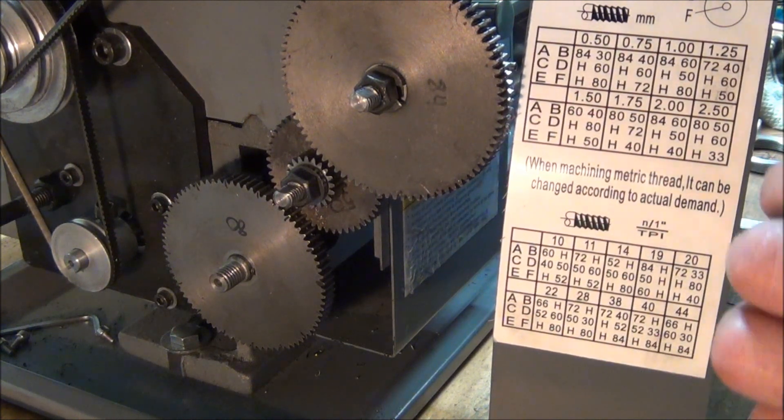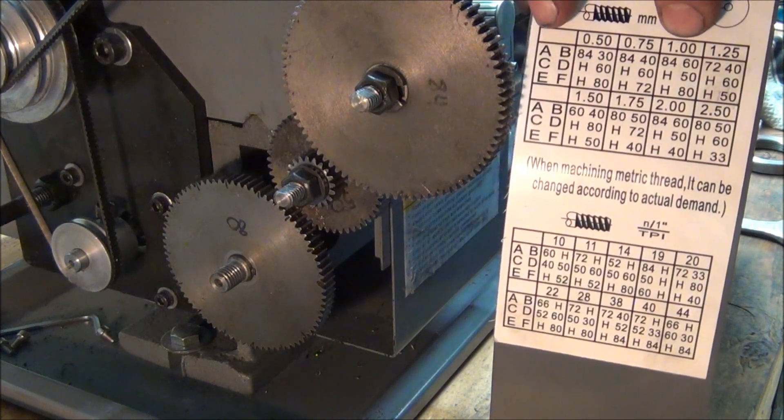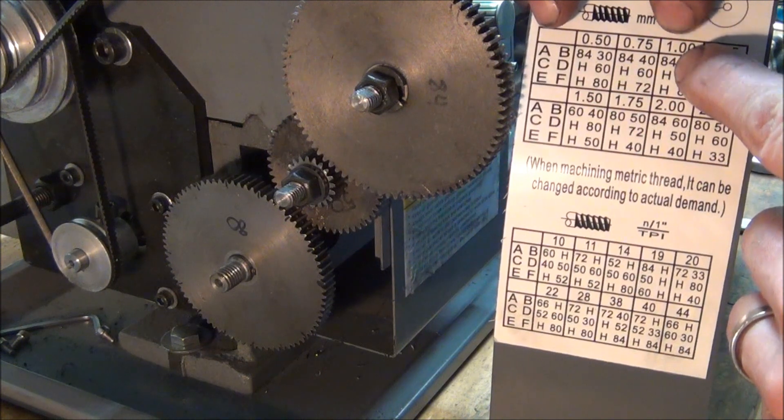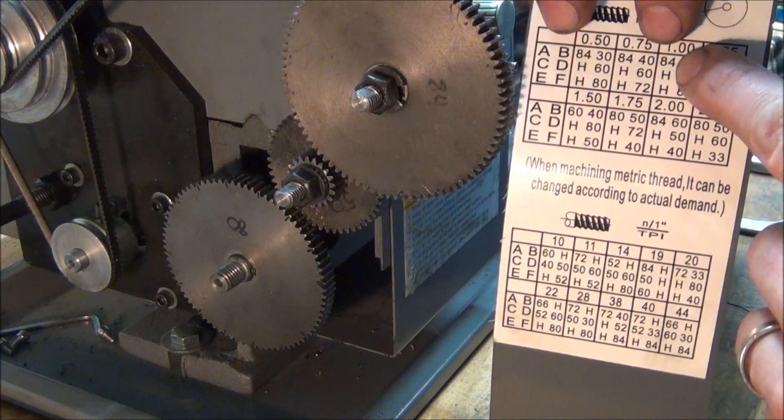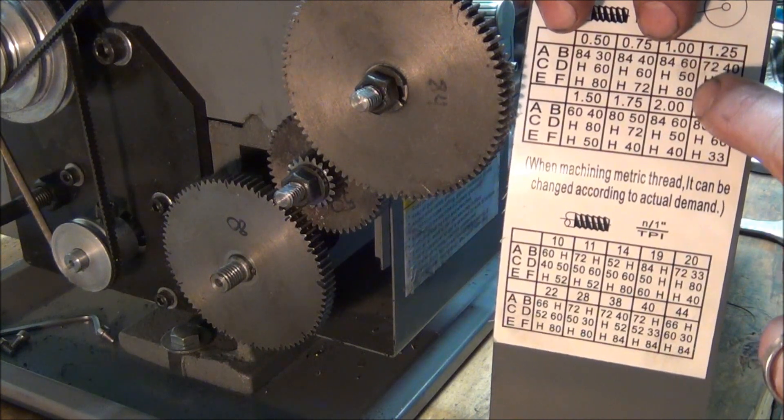If I'm reading this right, I'm pretty sure I am. We're using the one millimeter pitch, A gear, which is 84, that's driven by the spindle. On the back side of it is 60, 60 drives 50, 50 drives 80.